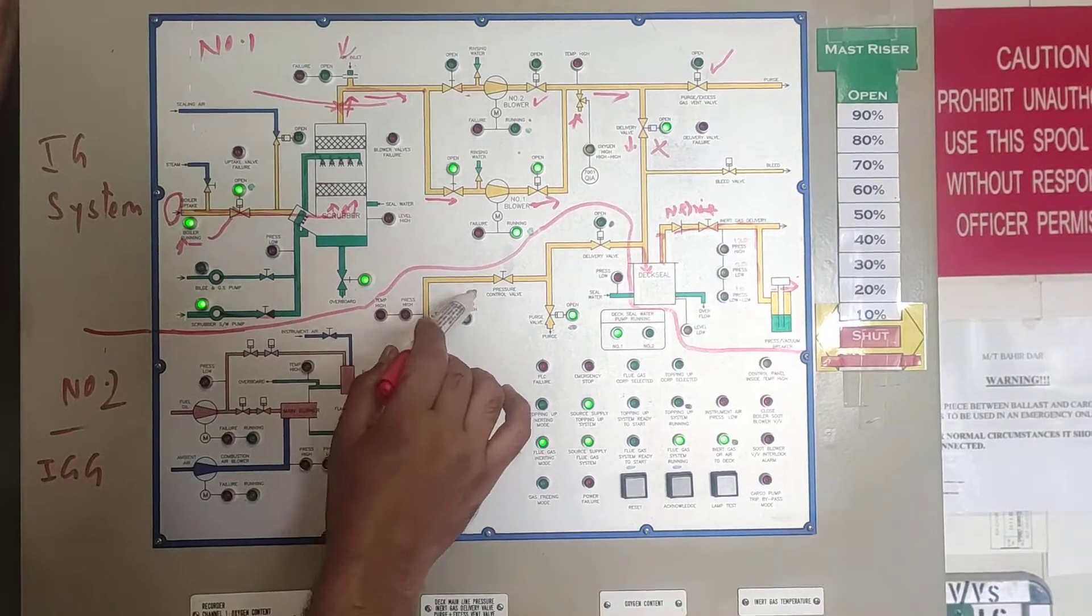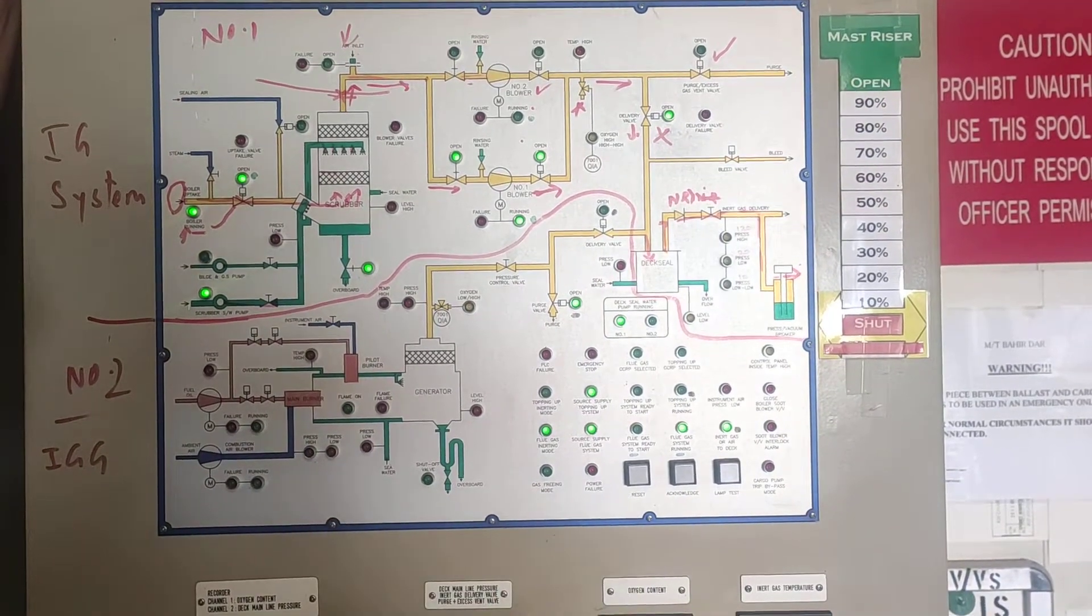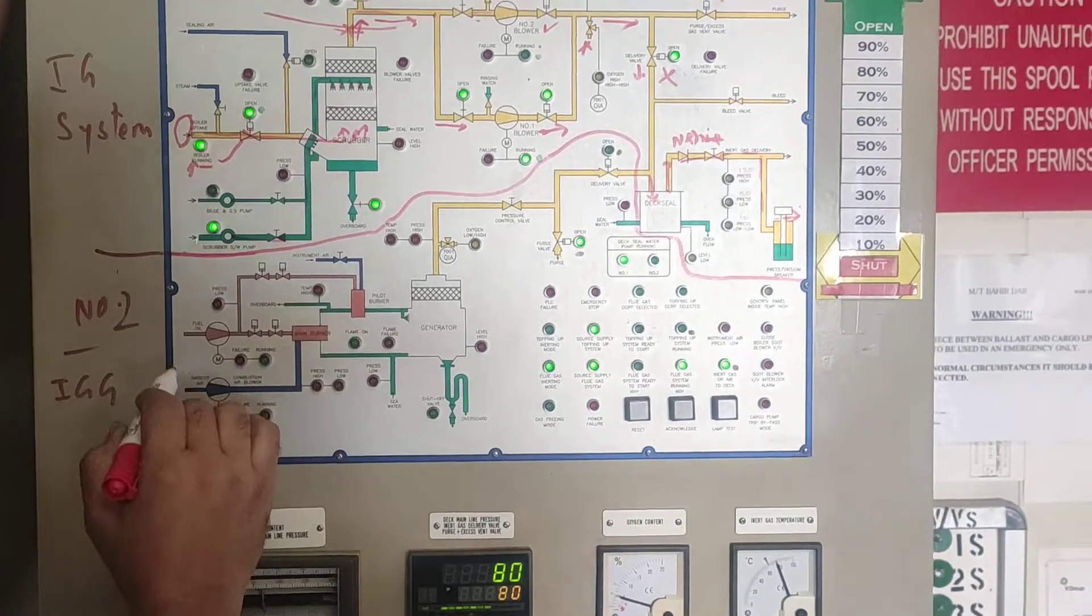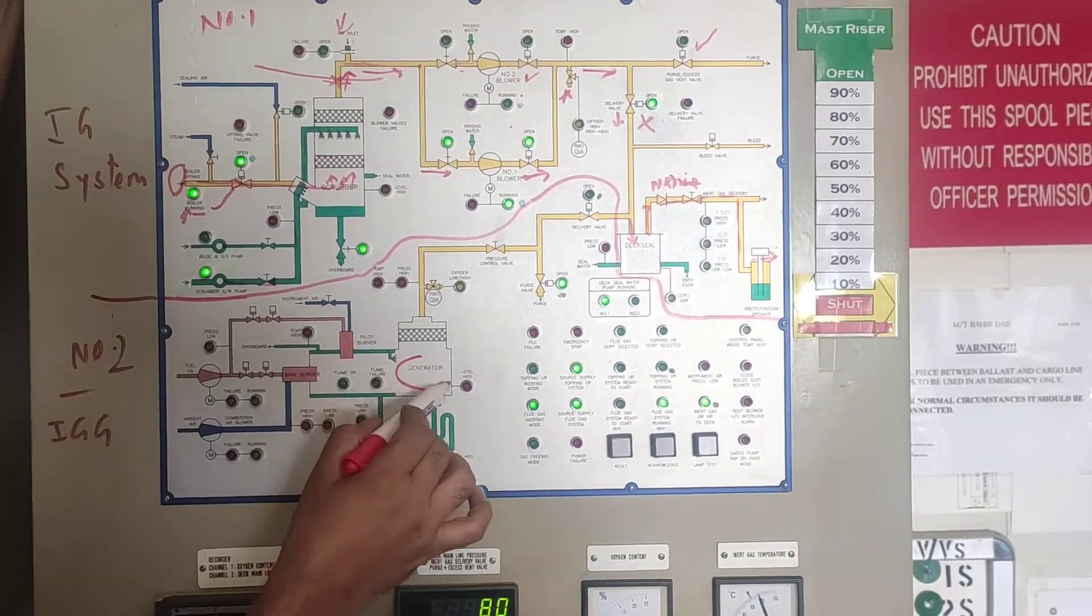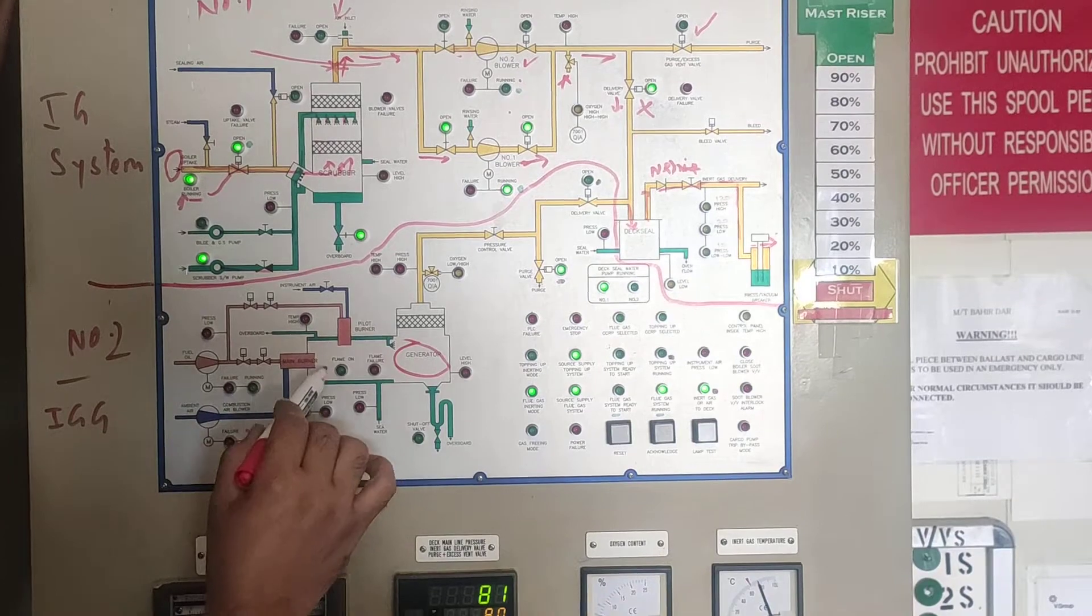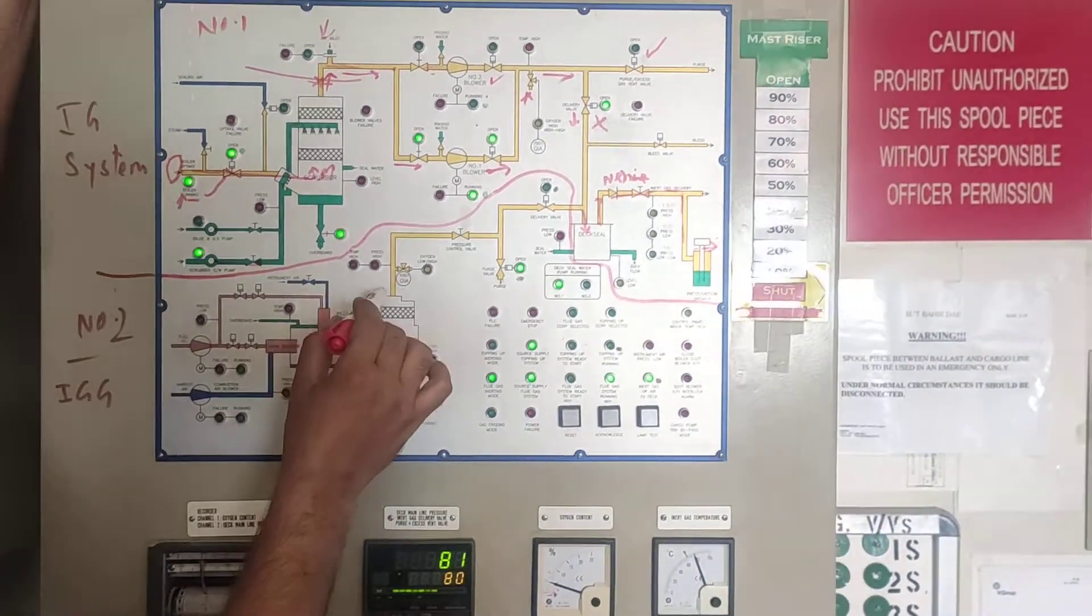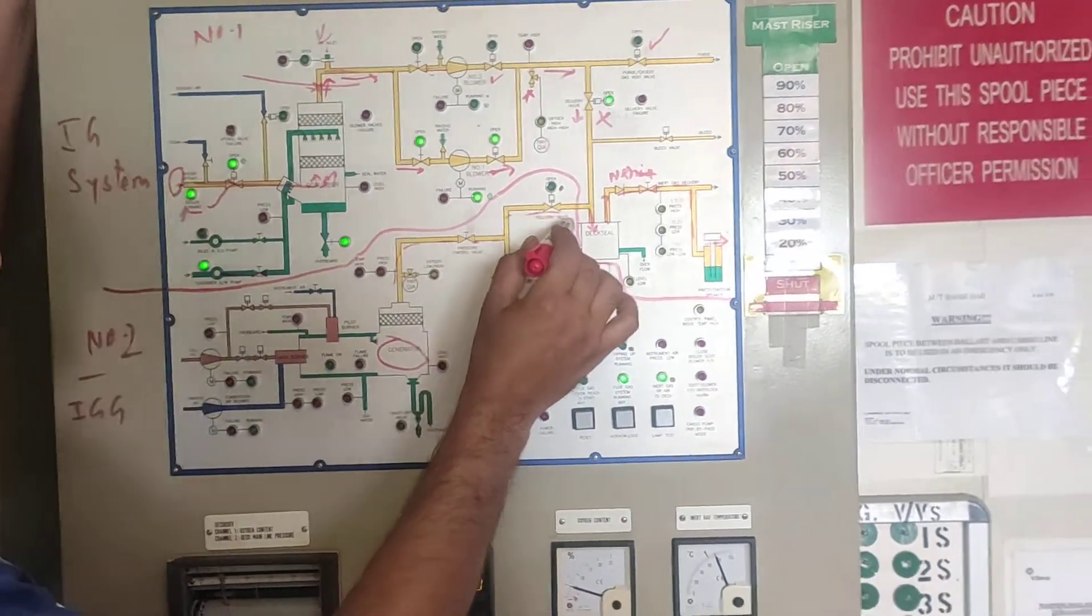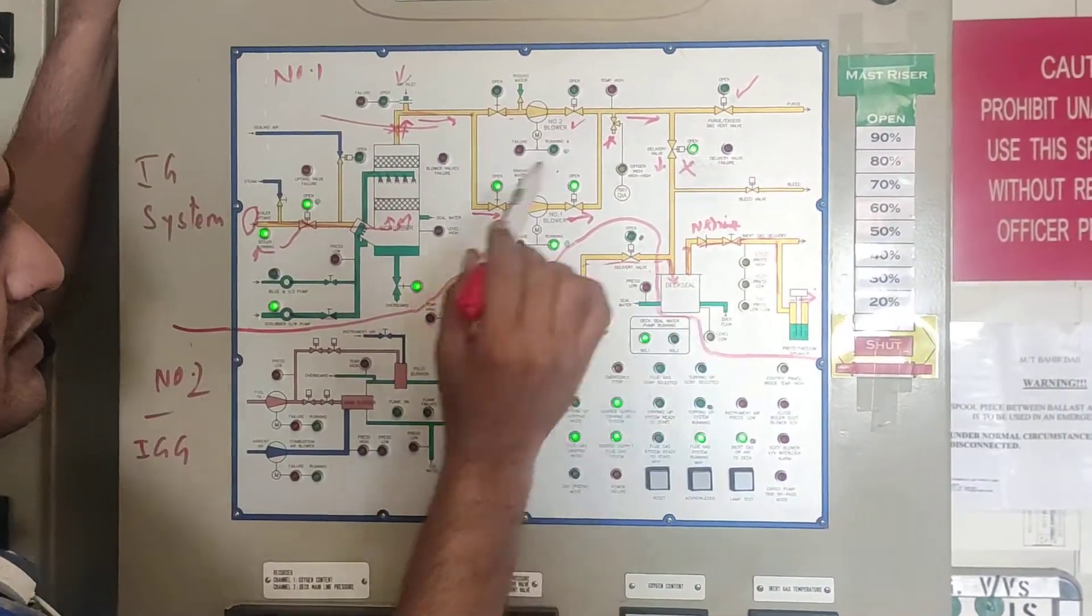The same thing is happening here. For example, if you want to just top off the IG, you don't want IG in bulk. That time you are going to use the inert gas generator. Inert gas generator gives you clean gas, clean IG. This is by burning the DO. Inert gas generator. Same, it comes here, through the delivery valve and it goes into the tanks.